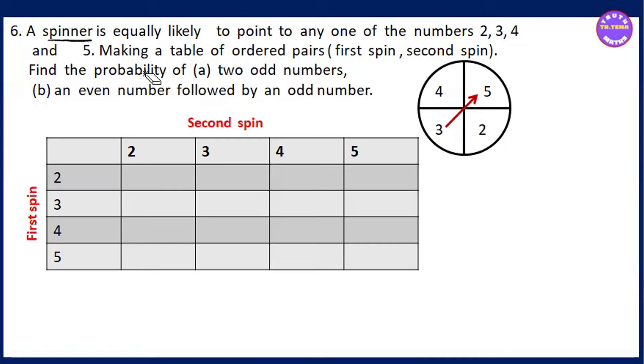We'll find the probability of outcomes. The two points are facing off. The first spin is 2, 0.